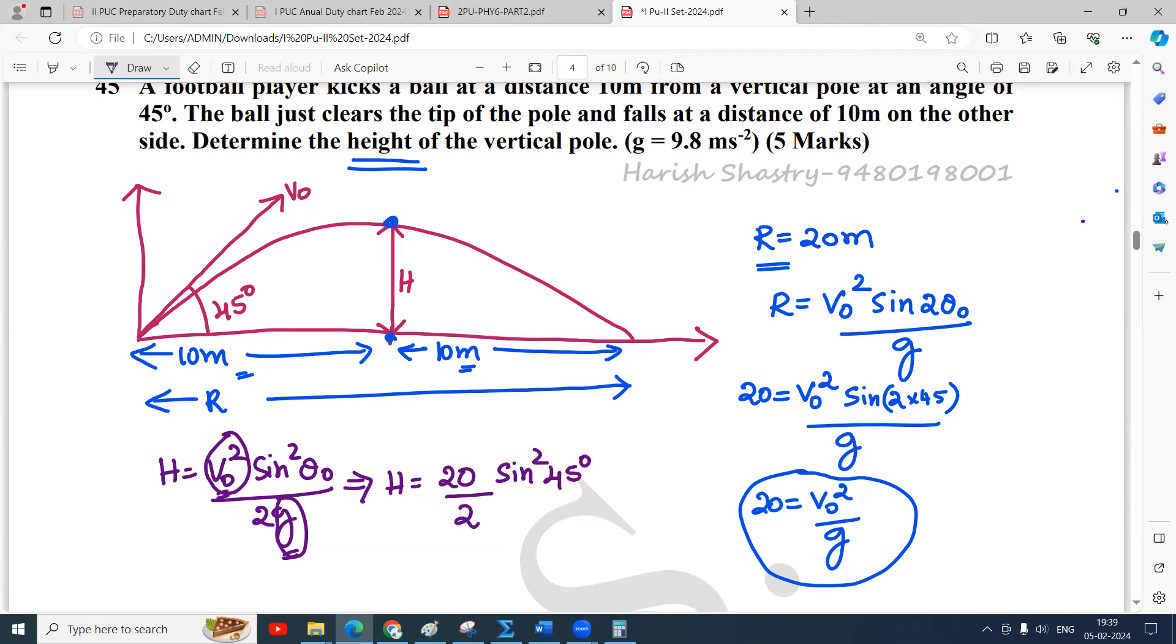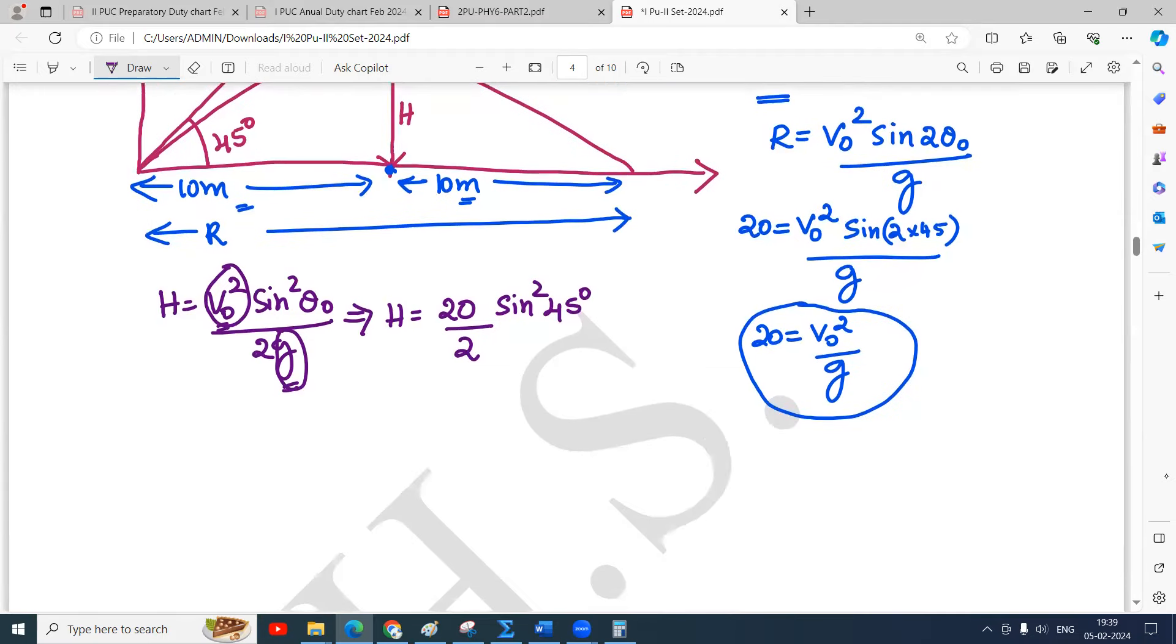Sin(45°) is 1/√2. Sin²(45°) is (1/√2)². So H equals 20 divided by 2 times (1/√2)², which equals 20/2 times 1/2, which is 20/4. Therefore, the maximum height reached is 5 meters.